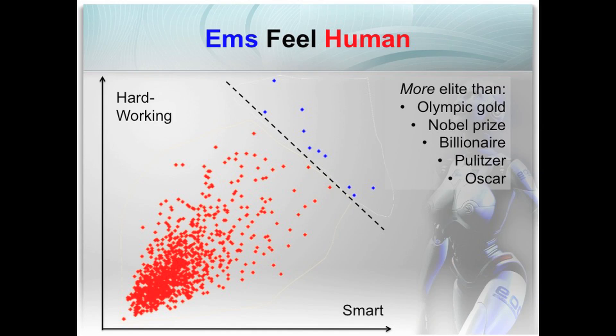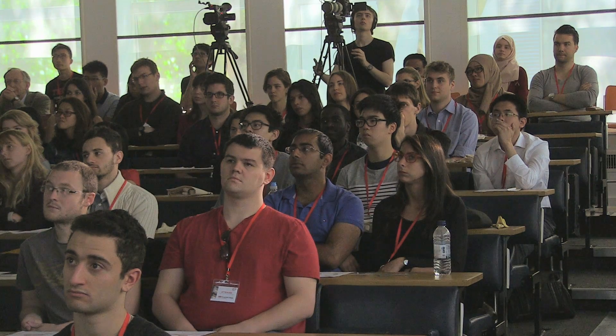All of the emulations started out as human, so they have the usual range of human characteristics — they are very much like humans, but not representative humans. The people who copy, train, and distribute emulations will focus on the most productive ones in this very competitive economy. Most emulations will come from, say, the few hundred most productive humans — making them as elite as or more elite than the typical human billionaire, head of state, Olympic gold medalist, or Nobel Prize winner.